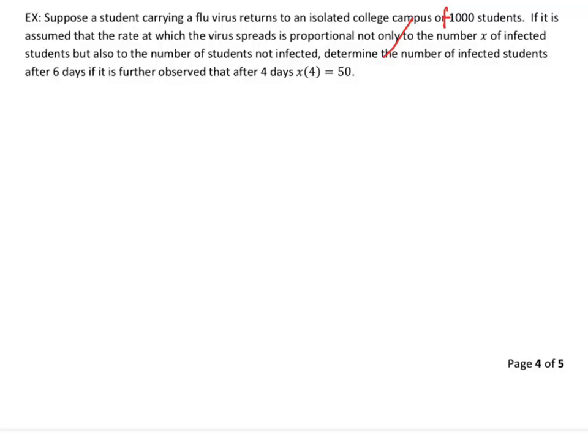So first of all, I want us to consider this statement right here. That is, we're going to assume that the rate at which the virus spreads is proportional to not only the number infected, but also those not infected. As a differential equation, that will look like this. It is dx dt is equal to k times x times 1,000 minus x.